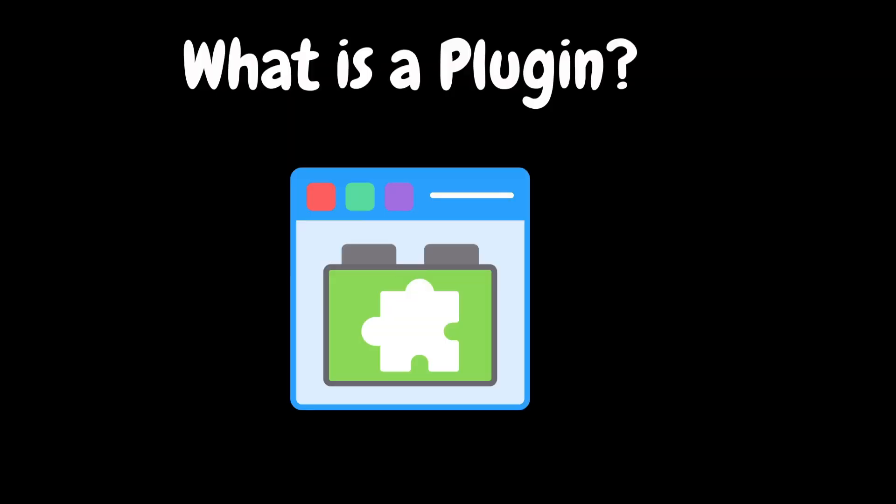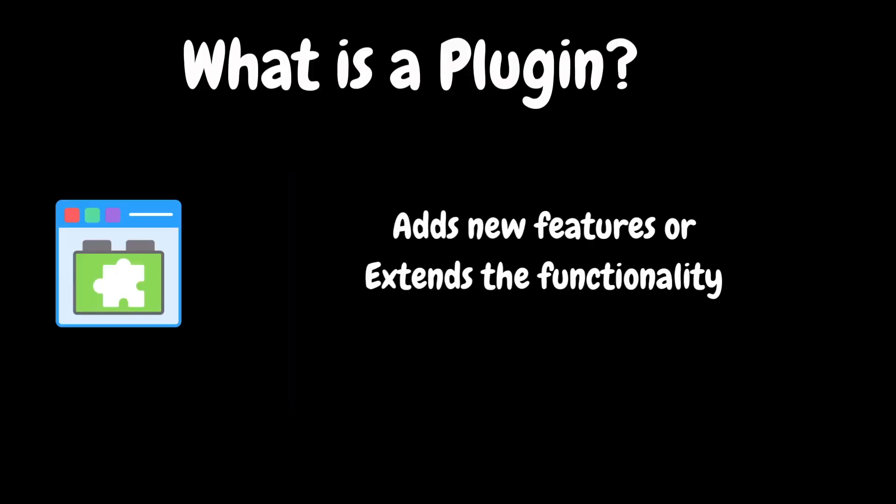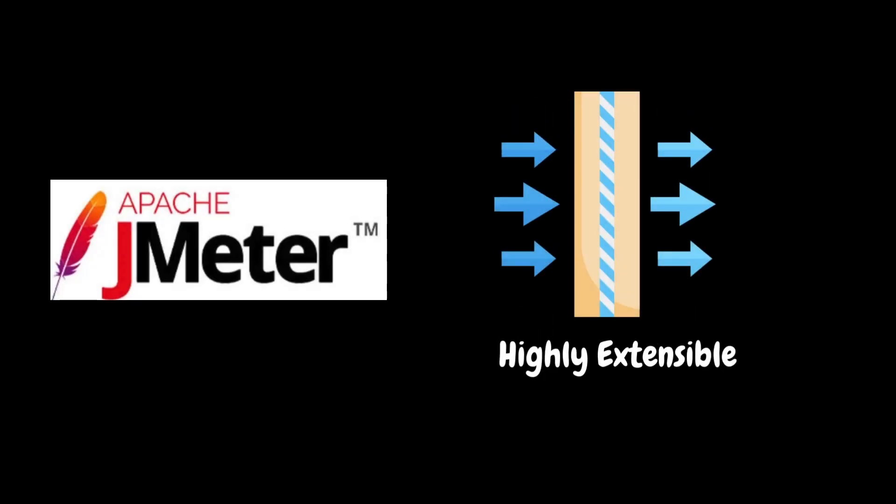That's where plugins came into the rescue. What is a plugin? In generic terms, a plugin is a piece of software component that adds new features or extends functionality on an existing application. In our initial JMeter video, we learned one of the JMeter core features — it is highly extensible. That means it allows users to expand JMeter capabilities beyond its core functionalities with the help of different plugins developed by the JMeter community. This is one of the reasons behind JMeter's popularity in performance testing these days.